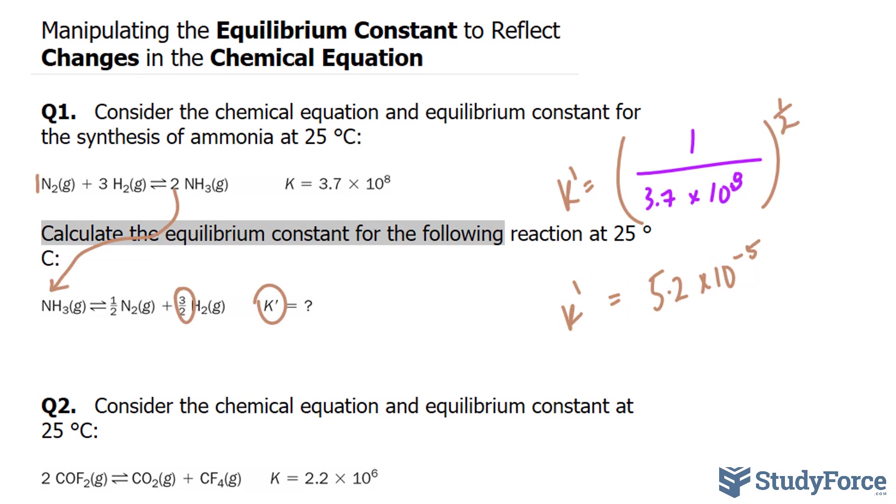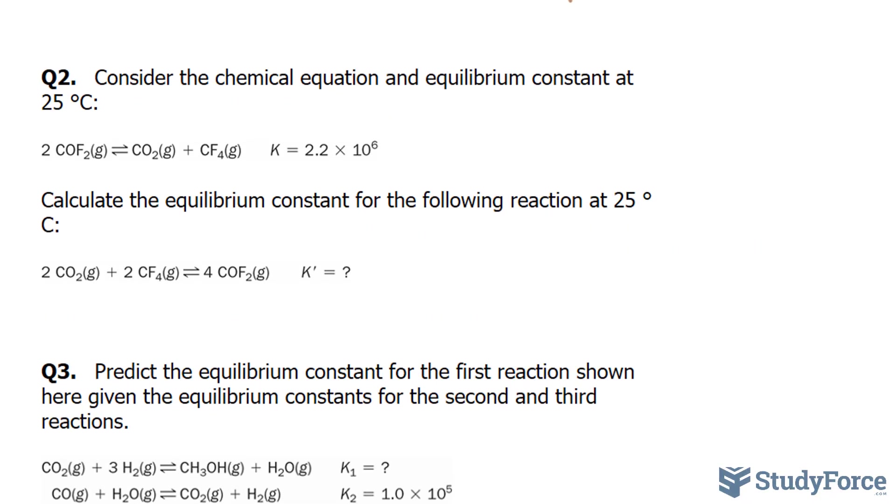That's the answer to question number 1. Let's move on to question 2. Consider the chemical equation and equilibrium constant at 25 degrees. This is our chemical equation, our constant, and we need K prime.